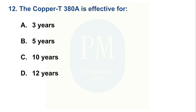Cu380A IUD is effective for: Option A: 3 years, Option B: 5 years, Option C: 10 years, Option D: 12 years. The correct option is Option C, 10 years.